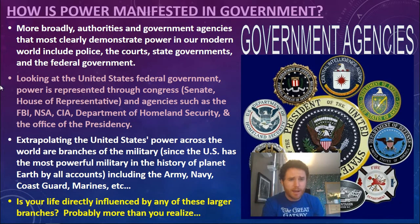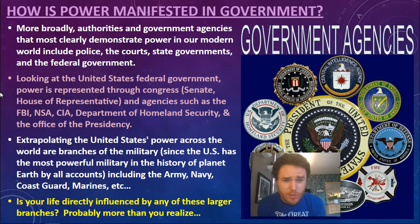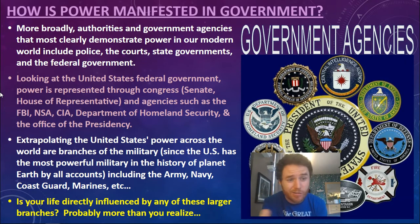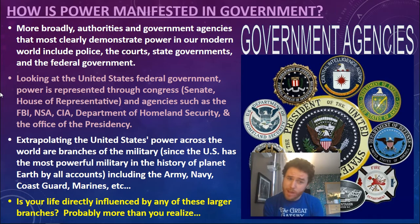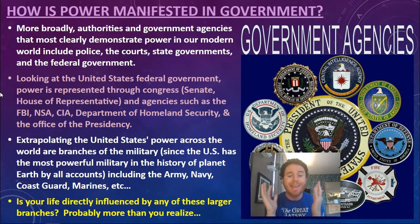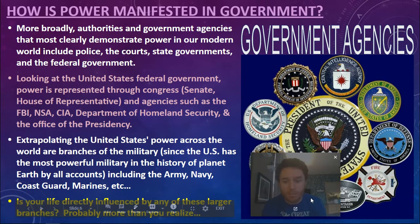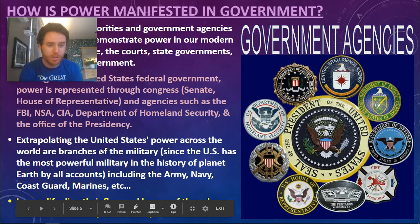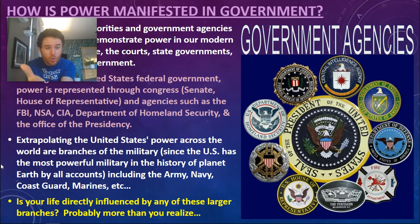More broadly, how is power manifested in government? Authorities and government agencies that most clearly demonstrate power in our modern world include the police, the courts, the state governments, and the federal government. Looking at how United States federal government power is represented through Congress, the Senate, the House of Representatives, and agencies such as the FBI, the NSA, the CIA, the Department of Homeland Security, and the Office of the Presidency. Extrapolating U.S. power structures across the world are the branches of the military.